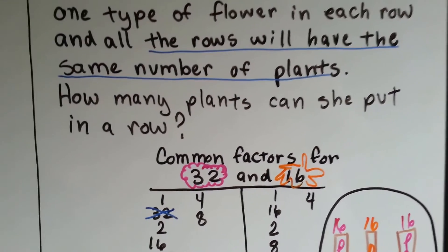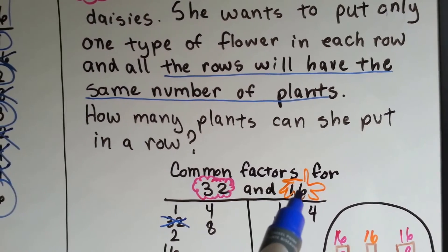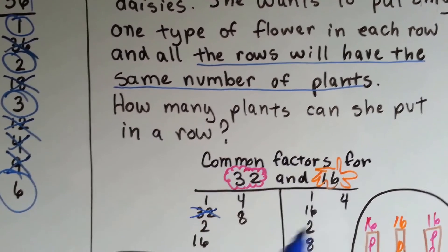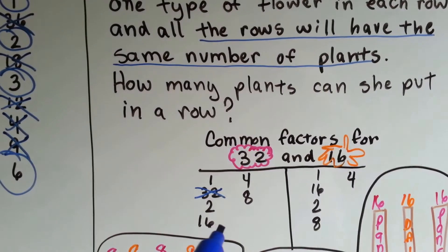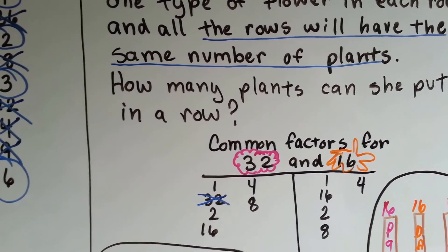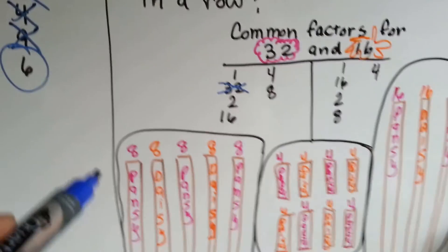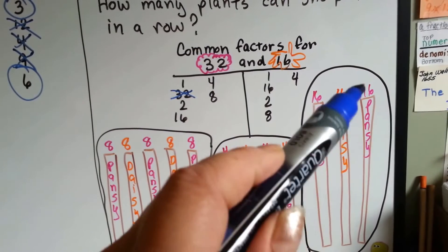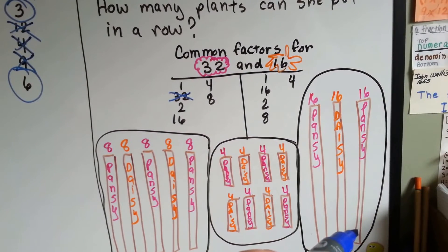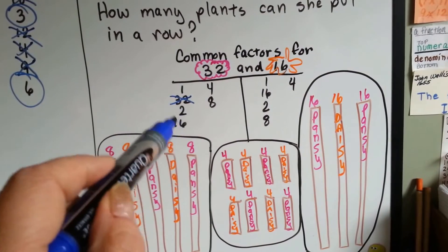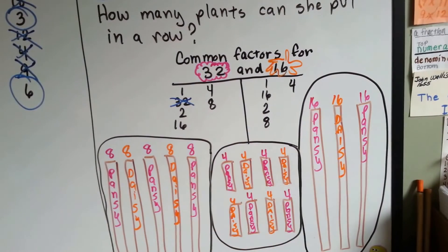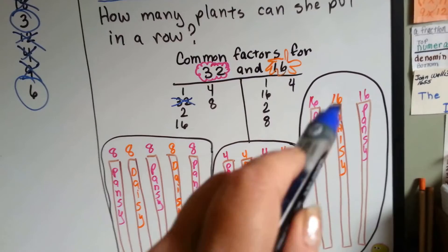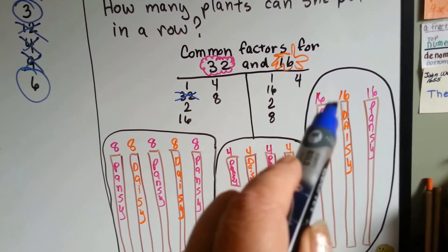She's got 16 daisies and 32 pansies, but she doesn't want to mix them. She could put them into rows of 16. She could have a row of 16 pansies here and a row of 16 pansies there — that makes 32, because 2 times 16 is 32. Then one row of 16 daisies down the center. That would be all 40 flowers, not mixed, with 16 in each row.